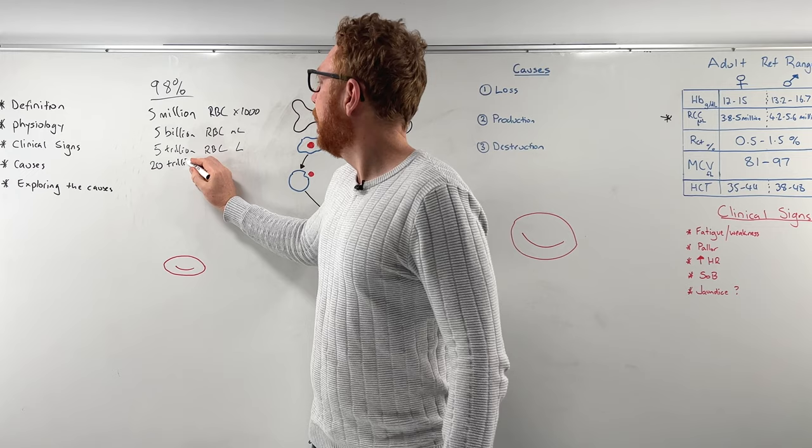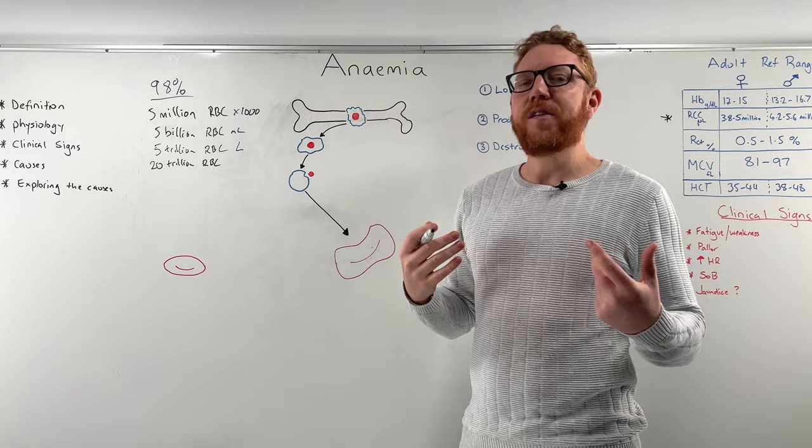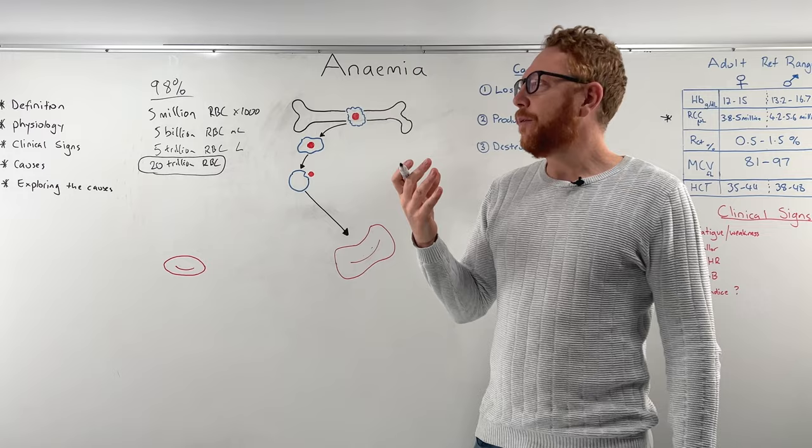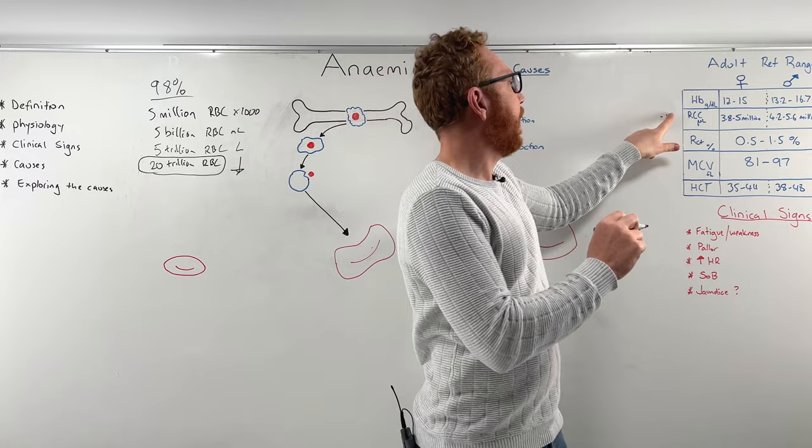That's about 60% of all the cells in your body, since we have about 30 trillion cells total. So what's this telling you? Red blood cells are a vitally important cell to carry oxygen. If we have a reduction in red blood cells — if you were to take your patient's blood and found a reduction in RBCs — that would lead to anemia.